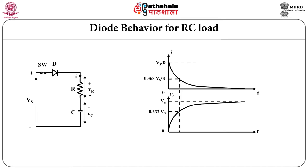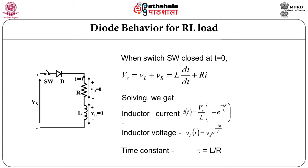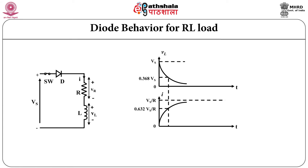Similarly we are going to study behavior with RL load. Assumptions are the same — diode and switches are ideal, switch is closed at t equals 0, initial condition i equals 0, no energy stored in the inductor. You will observe the exact opposite type of behavior to that of RC load — current is increasing slowly whereas voltage rises fast and then decreases at a faster rate.